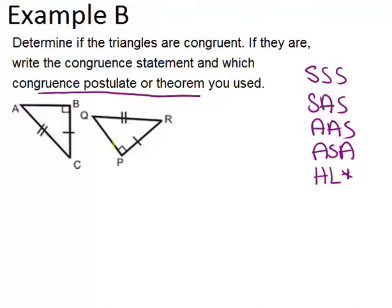we can see that they're right triangles, but remember that doesn't necessarily mean you'll use HL. You might still use one of the other ones, because knowing that they're both right triangles really just means that you know one pair of angles that's congruent.